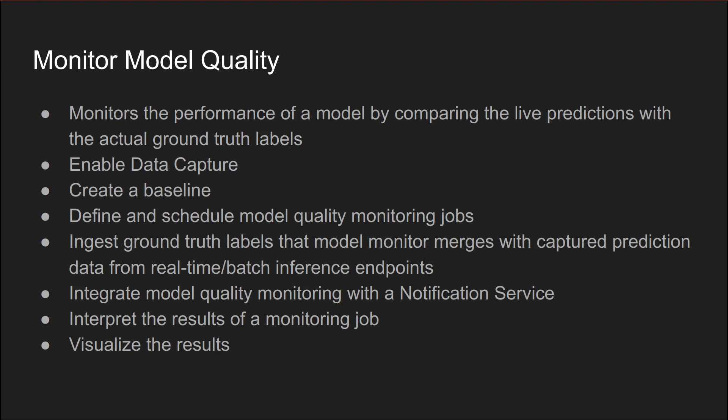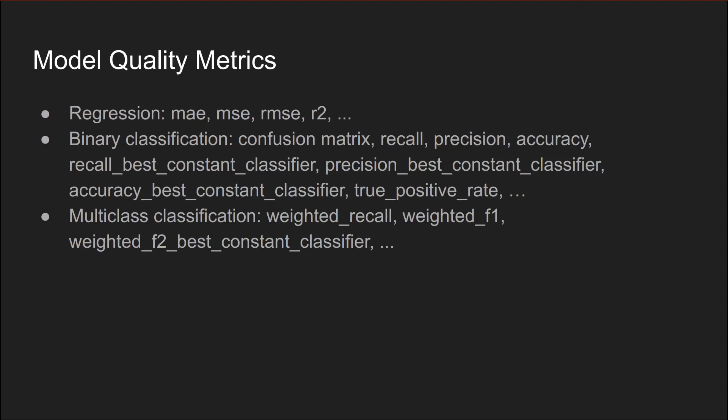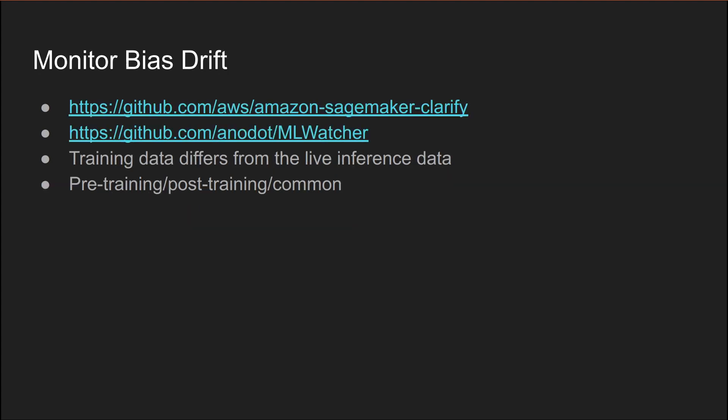Model quality monitoring is tracking model performance by comparing live predictions with actual ground truth labels. In general, the well-known metrics for loss minimization are still applicable, but they are integrated into the CI/CD system at each step of the pipeline.